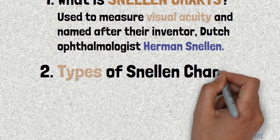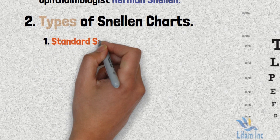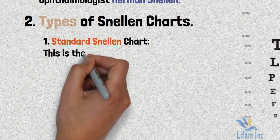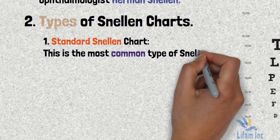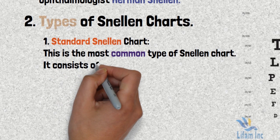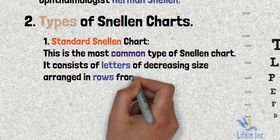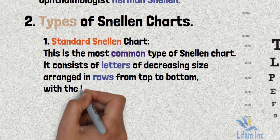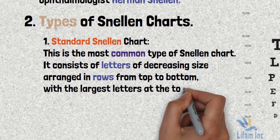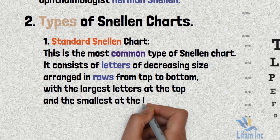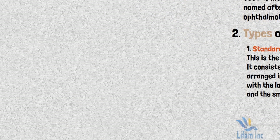There are two types of Snellen chart. The first is the standard Snellen chart, which is commonly used in health facilities because it is easy to access and easy to read. It consists of letters arranged in a decreasing manner in rows — normally 11 rows — with large letters on top and the smallest at the bottom. Some charts use figures instead of letters.